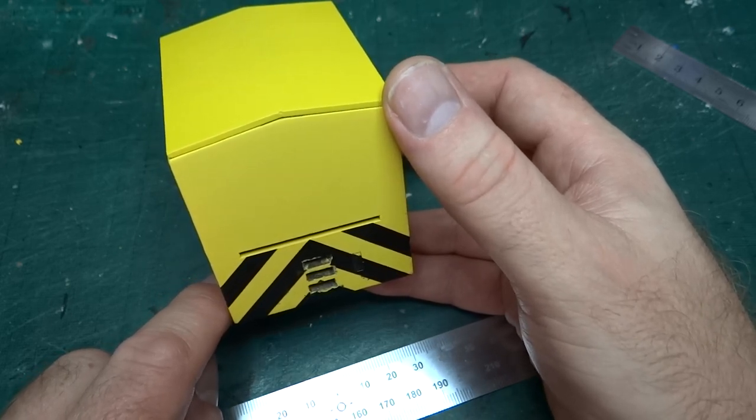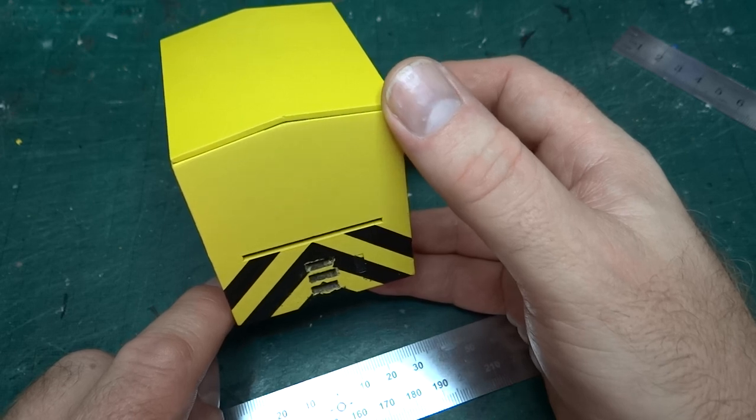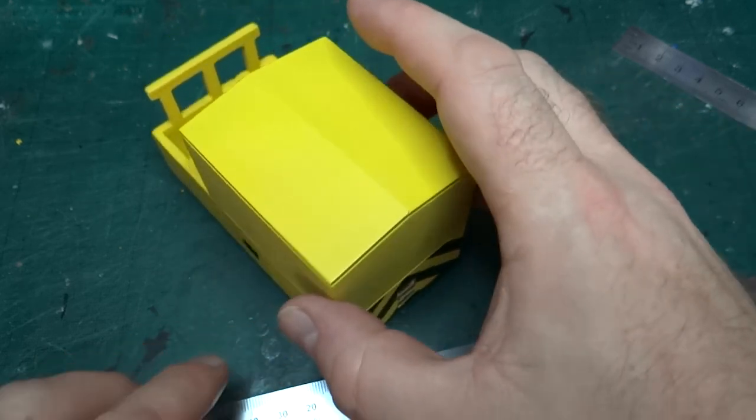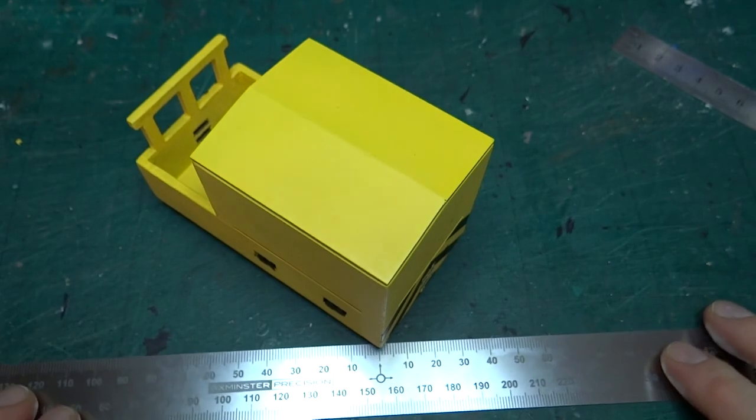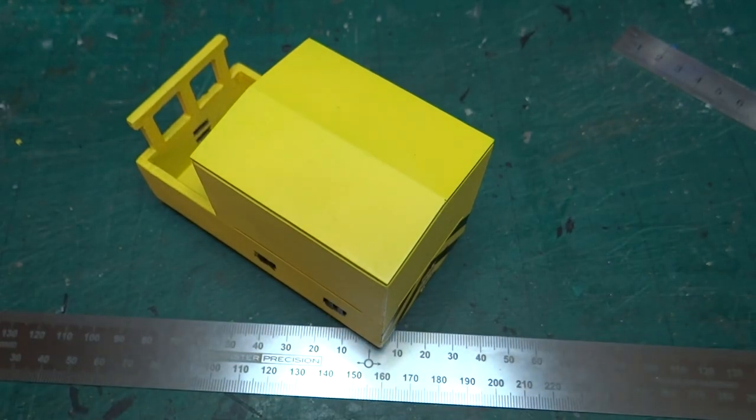...as you've seen in the other videos about this model in particular. So yeah, there we go. A ruler and a very brief mention of wasp stripes. Thanks for watching.